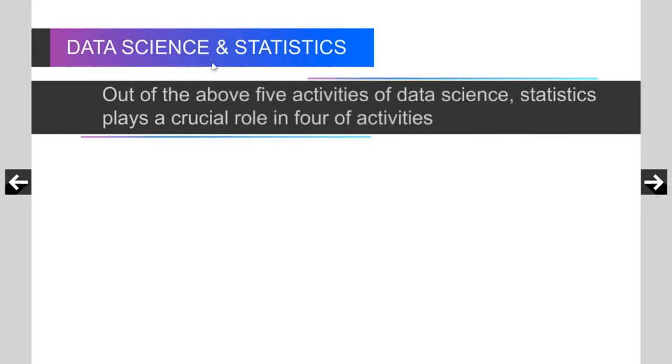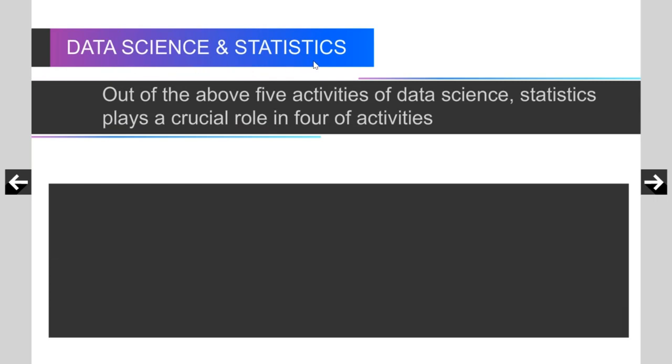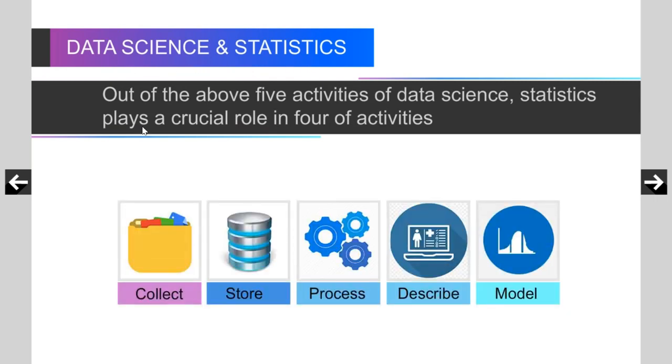Now, what is the similarity between data science and statistics? Now, you know, mathematics and statistics are related. At the same time, they are not the same subject, right? The MSc mathematics is a separate course, MSc statistics is a separate course. Similarly, there is a lot of relationship between these two subjects, but they are separate.